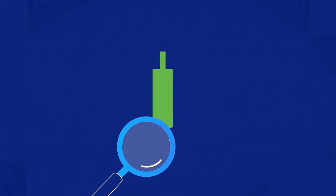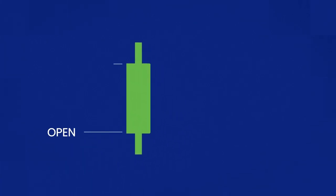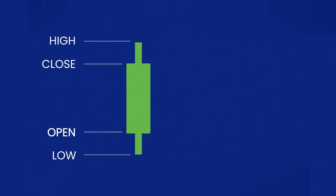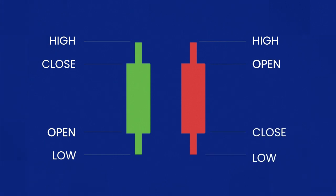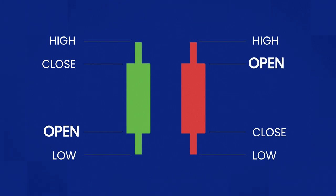Open and close prices depict the first and last price of a certain instrument for the selected time frame. High and low prices describe the highest and lowest price points within the specified time frame. However, due to the different colors and price movements of each candle, traders should bear in mind that the opening price of a green candle is the bottom of the full candle, whereas the opening price of a red-colored candle is its upper part.